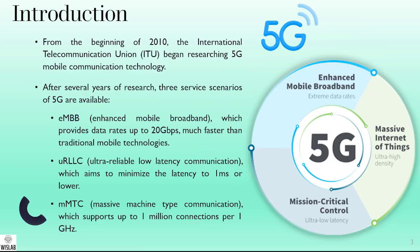From the beginning of 2010, the International Telecommunication Union, which is the ITU, began researching 5G mobile communication technology. After several years of research, three service scenarios of 5G were identified. The first is enhanced mobile broadband, aiming at extreme data rates up to 20 Gbps, much faster than traditional mobile communication technologies. The second scenario is ultra reliable low latency communication, or URLLC, aiming to minimize latency to 1 millisecond or lower.